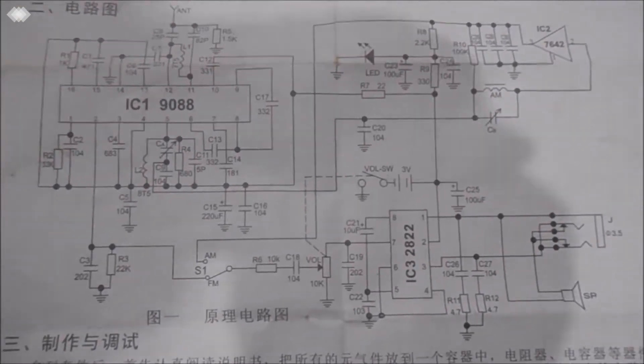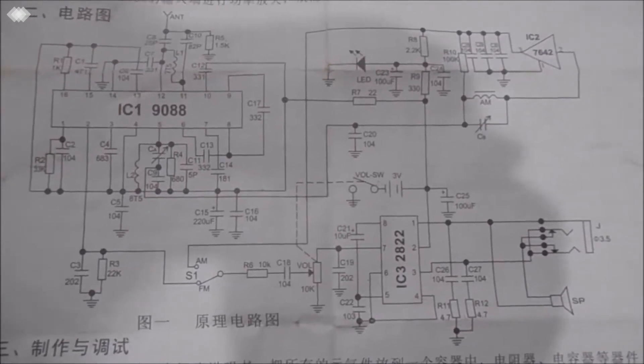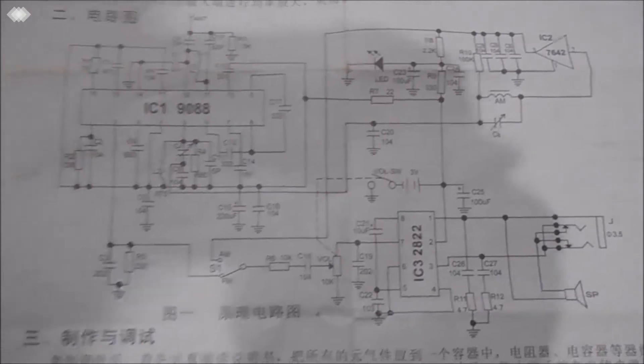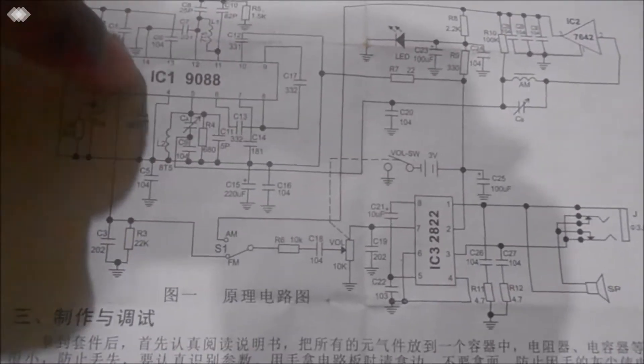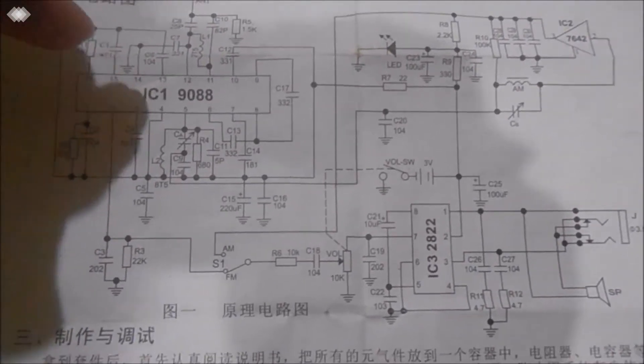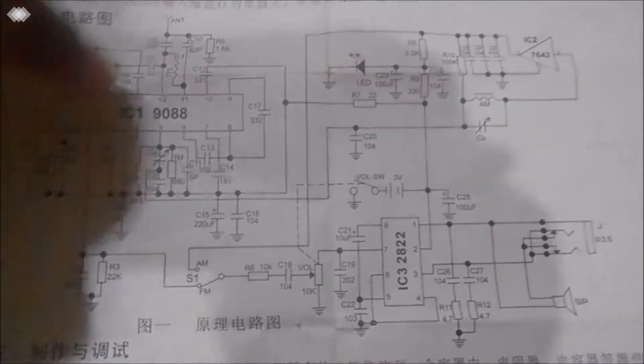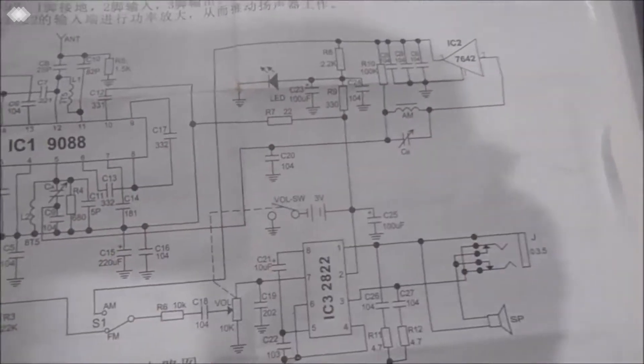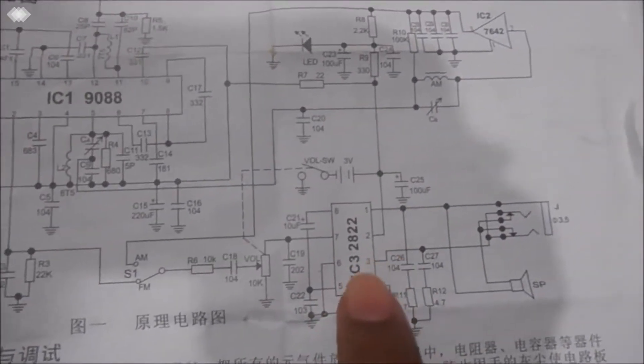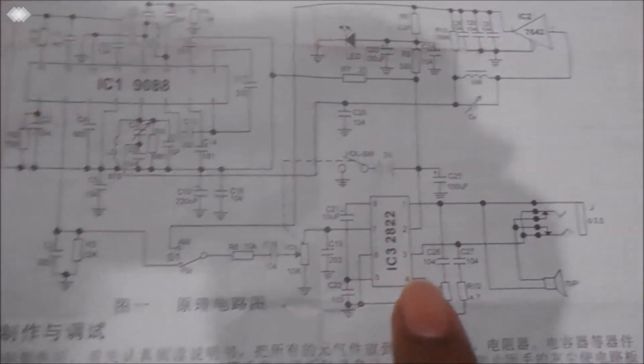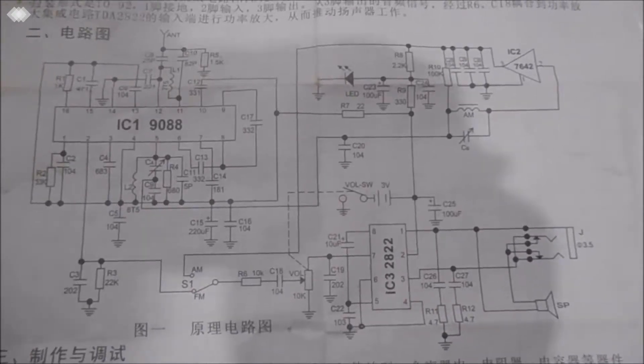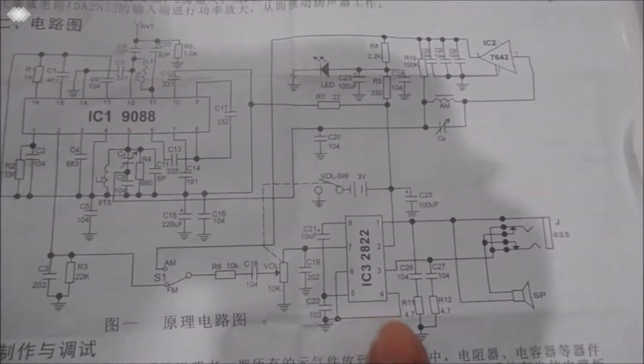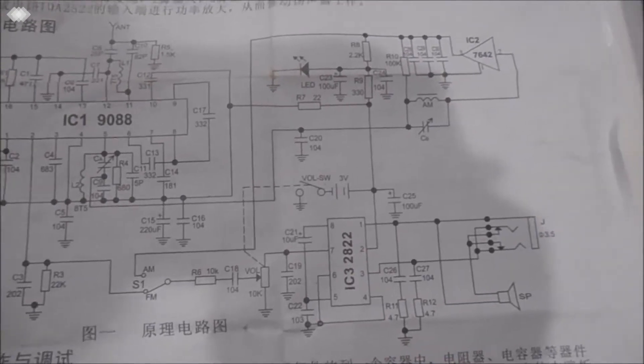This integrated circuit is for the FM receiver, this one is for the AM receiver, and this integrated circuit is for the audio receiver and amplifier. The audio section amplifies the results so they can be fed into the speaker, and we can hear the sound.